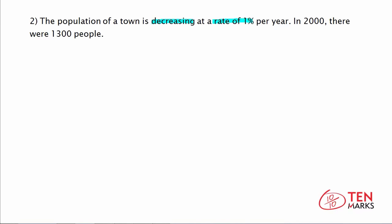The exponential decay function is given by y equals a times the quantity 1 minus r to the power of t, and this is valid when a is greater than 0.